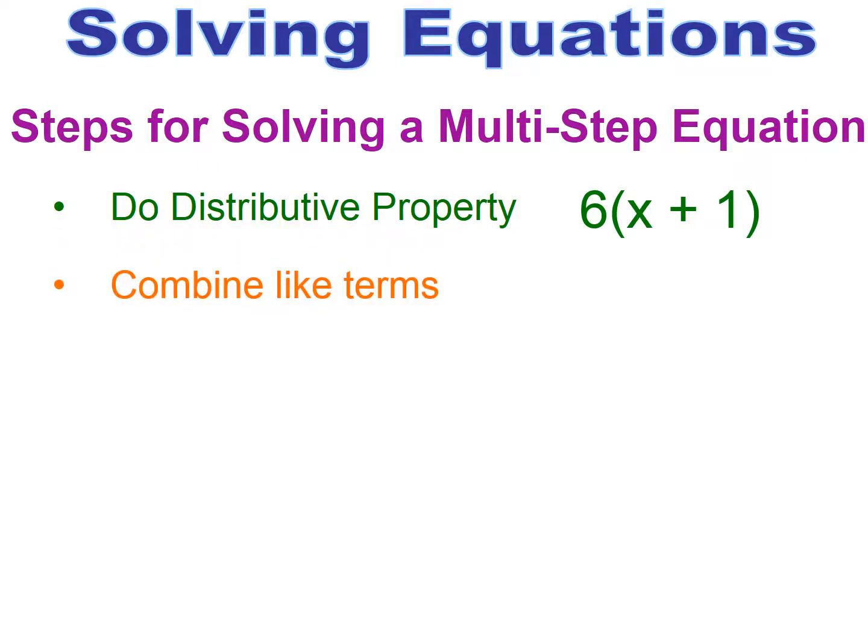Next you want to combine like terms. If you see in an equation — and like terms will be on the same side of the equal sign — if you see multiple same variables, you want to get them together first before you do any moving. So in this case you would get the 2x plus the 7x together and you would end up with 9x before moving to the next step.